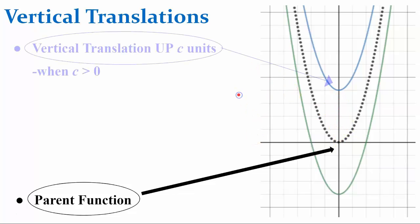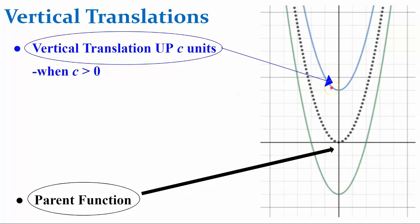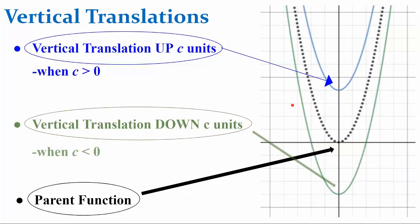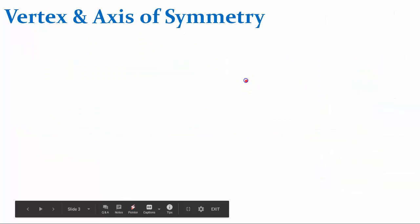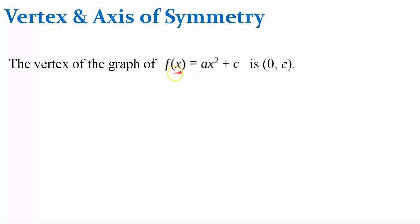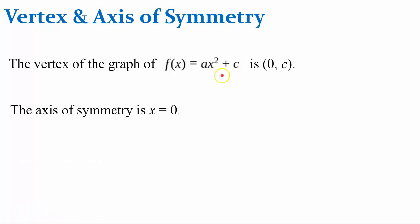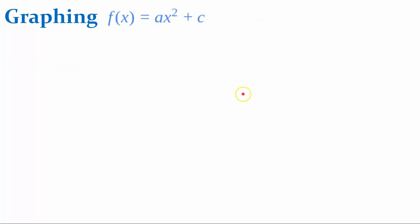So we have the parent function. This blue function here is a vertical translation up c units when c is greater than 0, and a vertical translation down c units when c is less than 0. The vertex of the graph of the function ax squared plus c is the point (0, c). The axis of symmetry is always the line x equals 0. Let's graph.